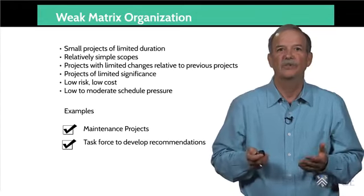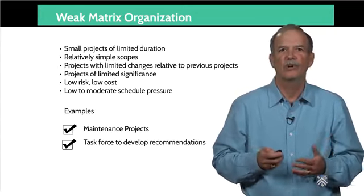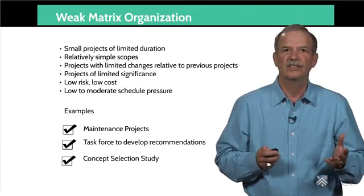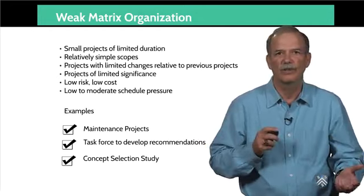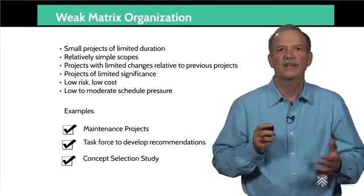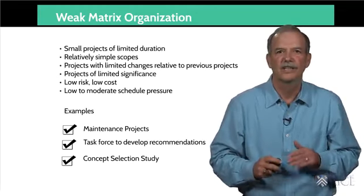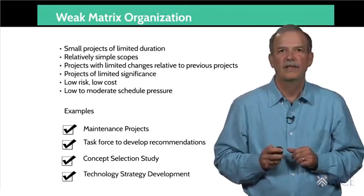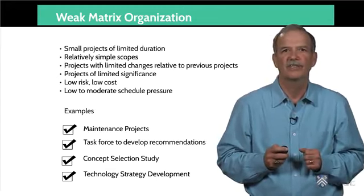Another example is when the organization puts together a task force to recommend changes. Each function nominates a representative, puts together its recommendations, and one member of the group coordinates those responses and oversees the process. The final report is usually a group effort also. Concept selection studies — after the concept for the project has been defined and the requirements set forth, the organization may study various options and configurations to determine which ones have the best potential. These configuration studies and options screenings are usually done in a weak matrix organization for small to medium sized projects. A single engineer coordinates the effort and pulls together the final review. A technology strategy development project may also follow a similar weak matrix structure.